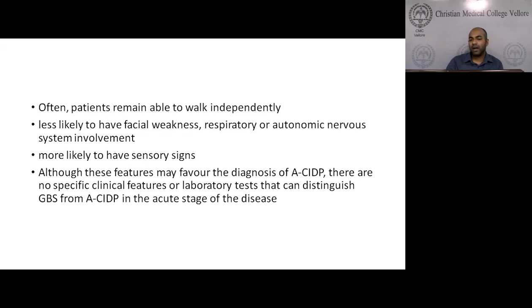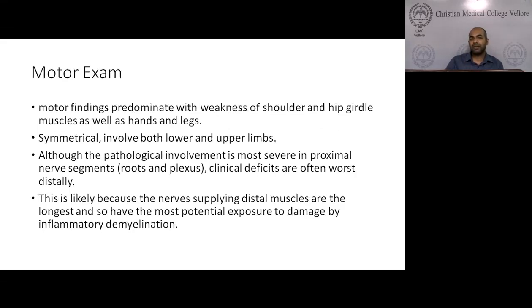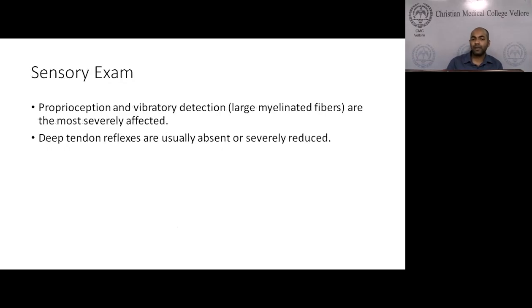These are clinical clues, though none are specific enough to concretely confirm acute onset CIDP — we have to wait for clinical progress. On motor examination in typical CIDP, there is proximal weakness of shoulder and hip girdle, symmetrical in both upper and lower limbs. Distal deficits also occur. Pathologic involvement is more severe in proximal nerves — roots and plexus. Clinical deficits most often appear as foot drop, likely because nerves supplying distal muscles are longest and have the most potential exposure to inflammatory demyelination.